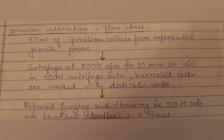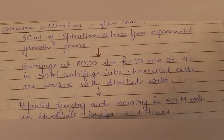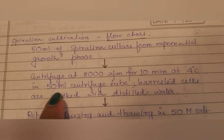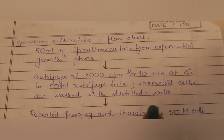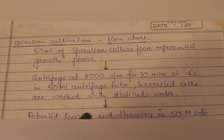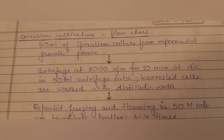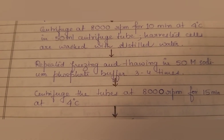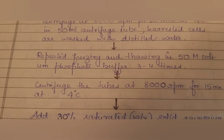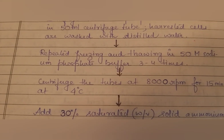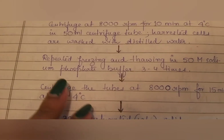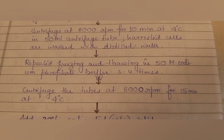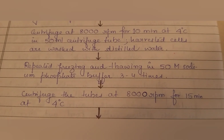The sample is centrifuged at 8000 RPM for 10 minutes at 4°C in a 50 ml centrifuge tube. The harvested cells are washed with distilled water — not tap water — to maintain sterility of the culture. Repeated freezing and thawing in 50 ml sodium phosphate buffer is carried out for 3 to 4 times.